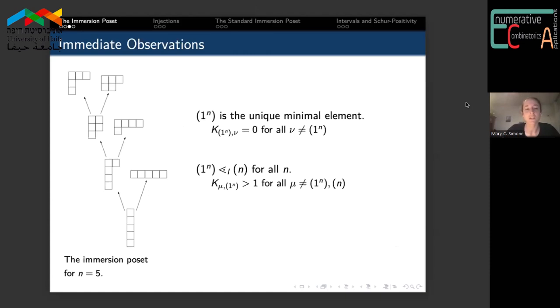Somewhat similarly, the single row partition covers the single column and is related to no other shapes. This is because the single row has exactly one standard filling, whereas every other shape that is not the single column has more than one standard filling.